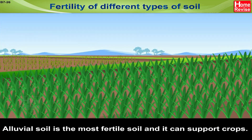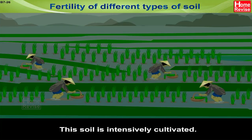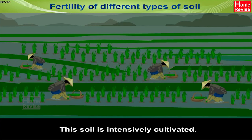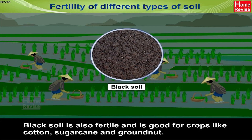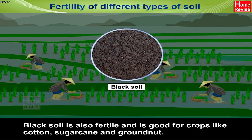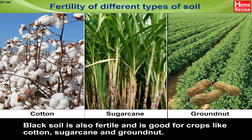Alluvial soil is the most fertile soil and it can support crops. This soil is intensively cultivated. Black soil is also fertile and is good for crops like cotton, sugarcane and groundnuts.